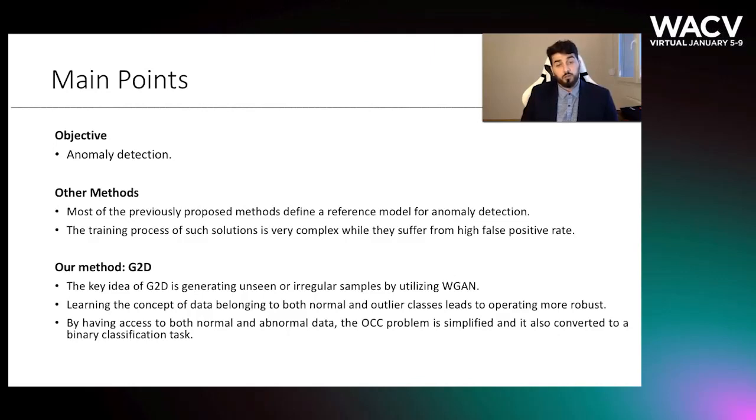Our work is related to anomaly detection. Traditionally, anomaly detection methods are based on the construction of a normal model according to a number of criteria, with the objective of detecting elements that do not match this model. However, the variety and complexity of normal data make the training process of such solutions very complex, and the scarcity or total absence of abnormal training samples leads to the occurrence of many false positives. For this reason, the key idea of G2D is generating unseen or irregular samples by using GAN.